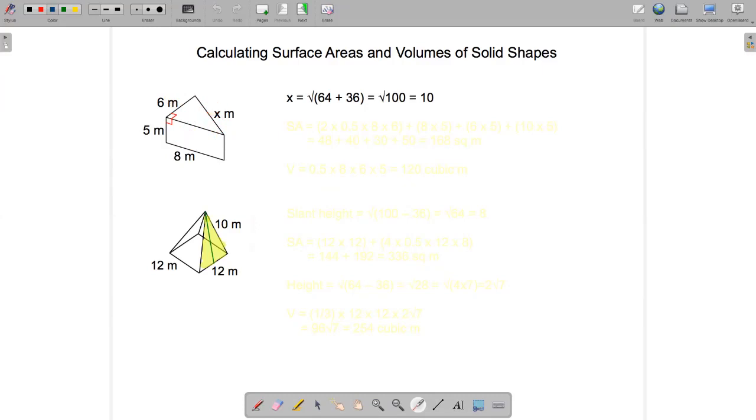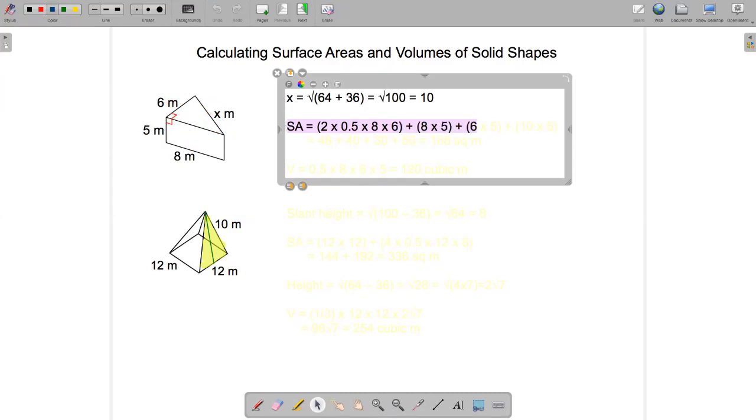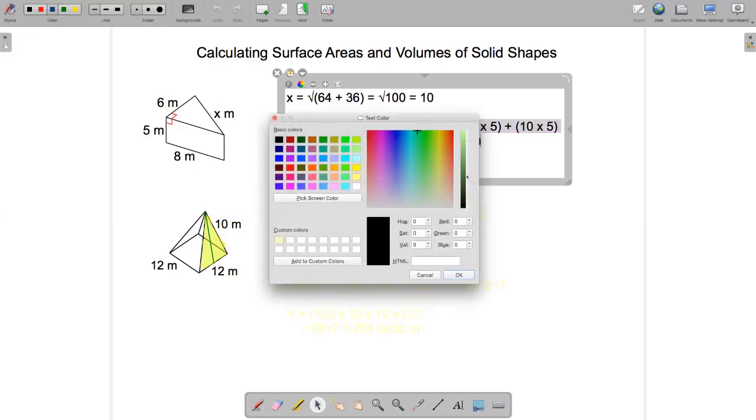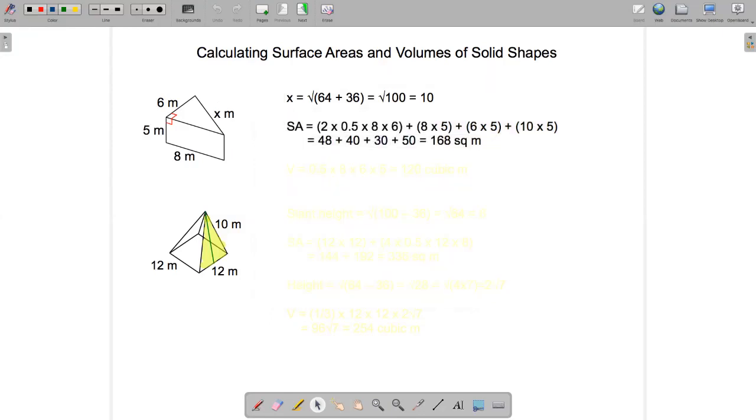So the surface area will be the two triangles, 2 times a half times 8 times 6, the rectangle at the front, the rectangle at the back left, the rectangle at the back right. Calculate all that out and then use additivity to add the pieces together and we get 168 square meters.